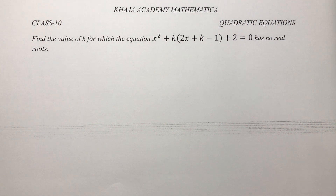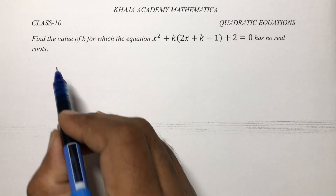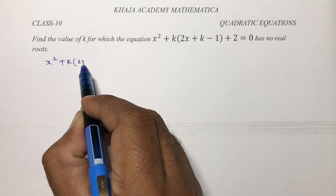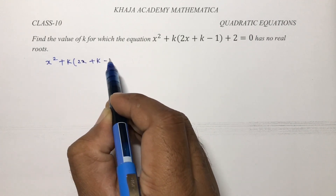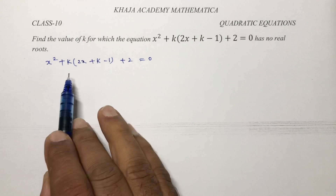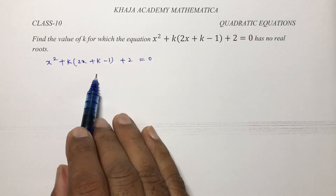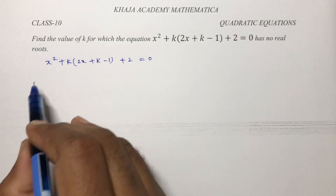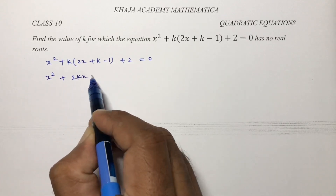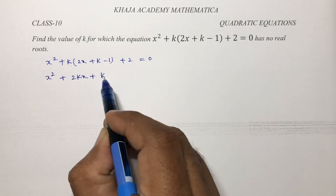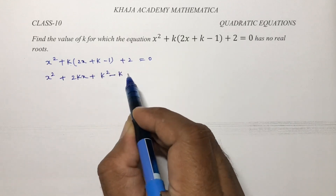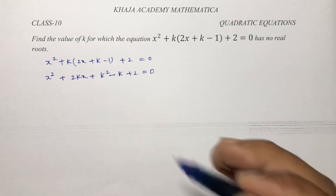Find the value of k for which the equation x squared plus k times (2x plus k minus 1) plus 2 equals 0 has no real roots. It is not in standard form, so first write it in standard form: x squared plus 2kx plus k squared minus k plus 2 equals 0.